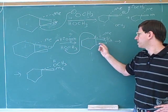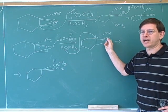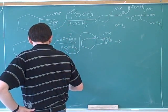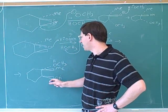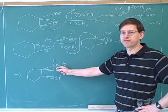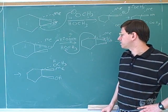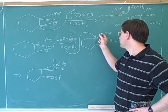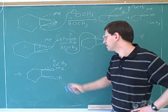How about the leaving group — will it end up on a wedge or a dash? That bond isn't changing. We had a backside attack: the nucleophile ends up opposite to where the leaving group is, and that has to push the methyl group forward. In some ways this is still like SN2 because we're getting inversion of configuration — where the methyl used to be behind, now the methyl group is in front.